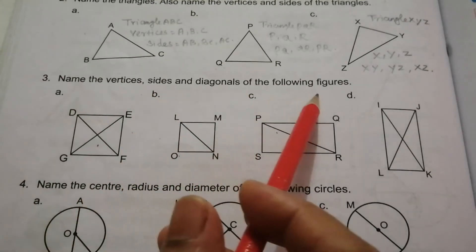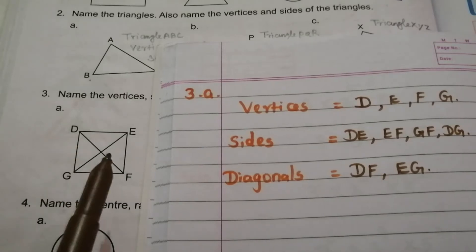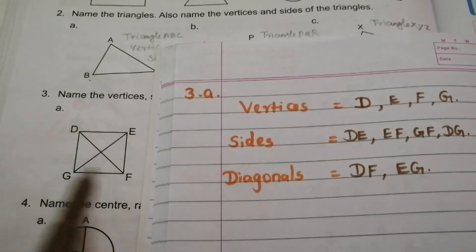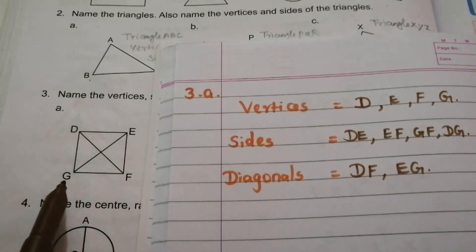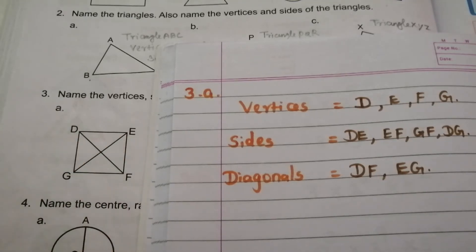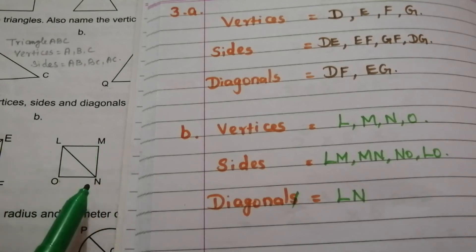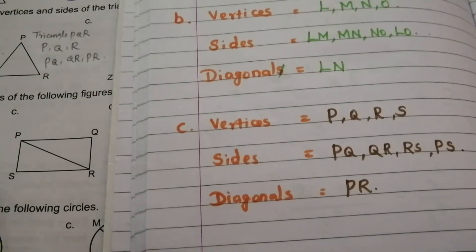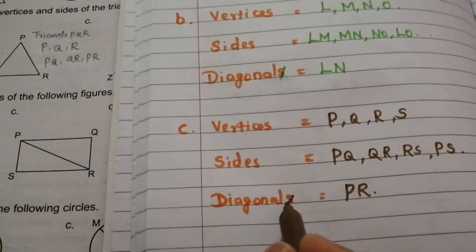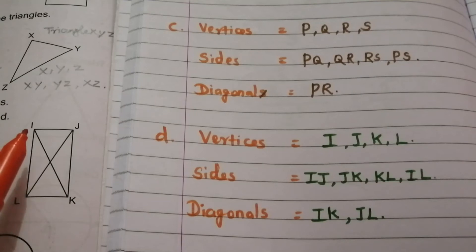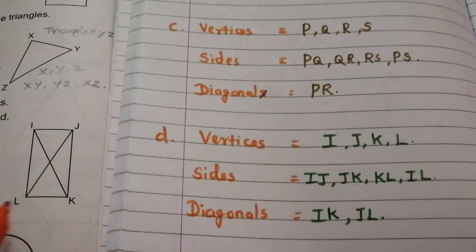Name the vertices, sides and diagonals of the following figures. For figure A: vertices are D, E, F, G; sides are DE, EF, FG and DG; diagonals are DF and EG. For figure B: vertices are L, M, N, O; sides are LM, MN, NO and LO; and it has only one diagonal, LN. For figure C: vertices are P, Q, R, S; sides are PQ, QR, RS and PS; and it has only one diagonal, PR. For figure D: vertices are I, J, K, L; sides are IJ, JK, KL and IL; and diagonals are IK and JL.